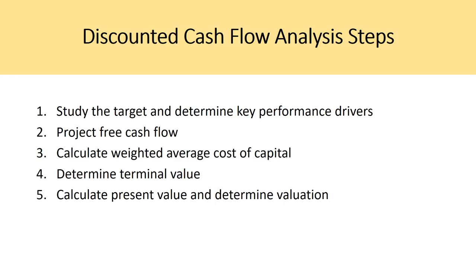The steps to a DCF model are: one, study the target and determine key performance drivers; two, project the free cash flow; three, calculate the weighted average cost of capital; four, determine the terminal value; and five, calculate the present value and determine valuation by discounting future free cash flows and the terminal value back to the present. There are a lot of assumptions in these steps and we're going to go through each one.